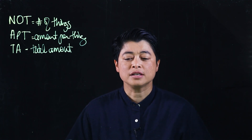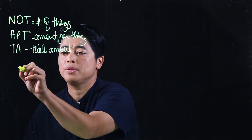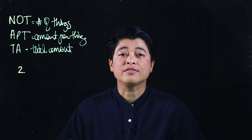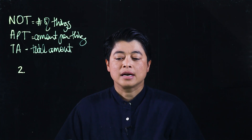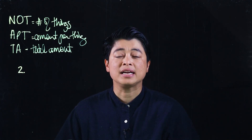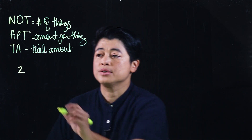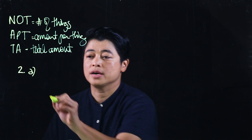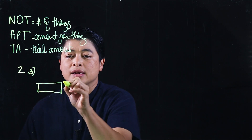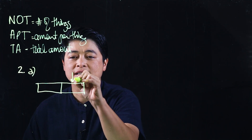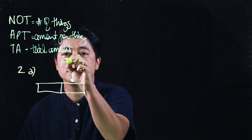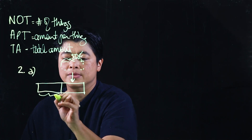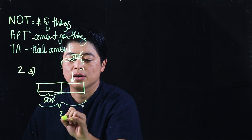Starting with page 39, problem number two: Maggie had 50 cents and her mother gave her 50 more cents. Question A asks how much money does Maggie have altogether. Since the question asks for the total and the mom gave her more, this is an add-on problem — 50 cents plus an additional 50 cents, with the whole thing as the question.